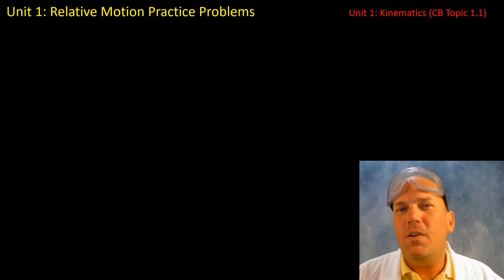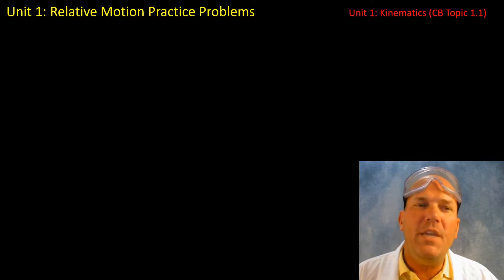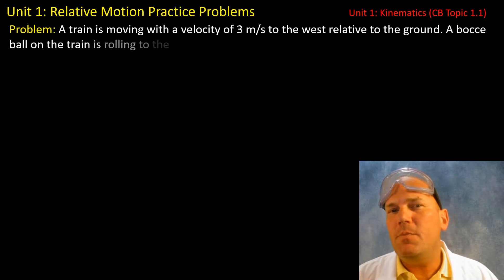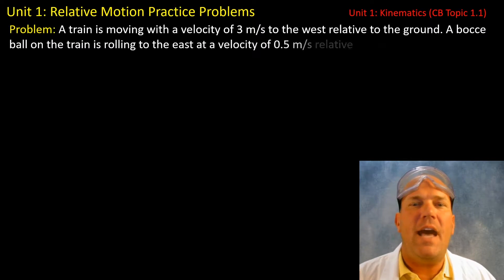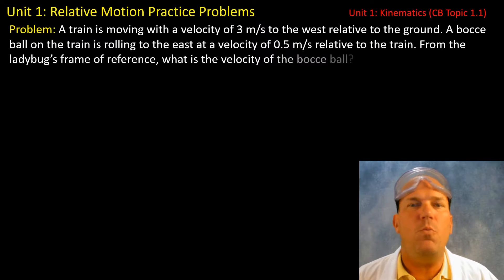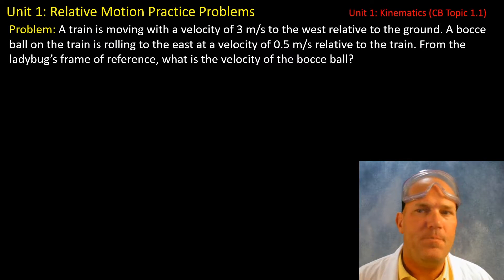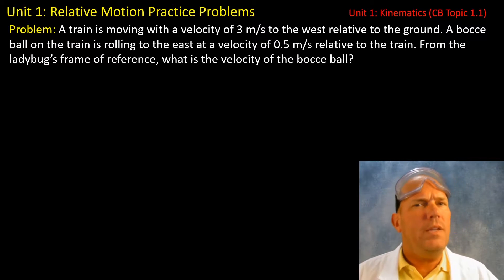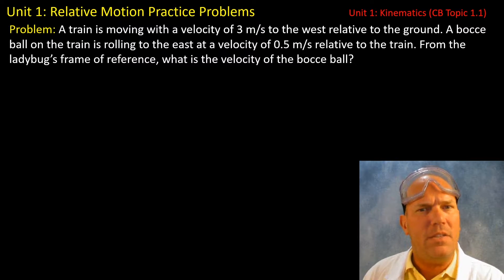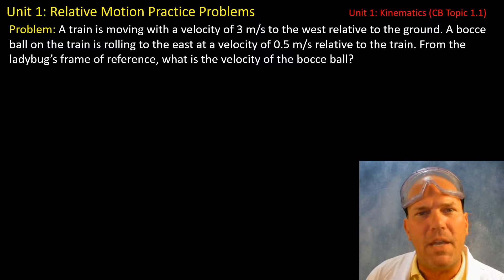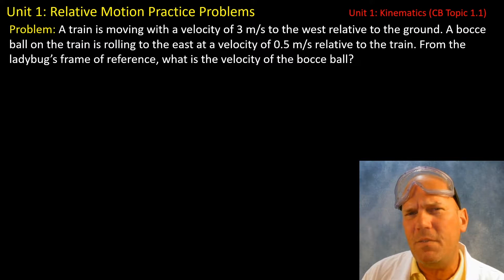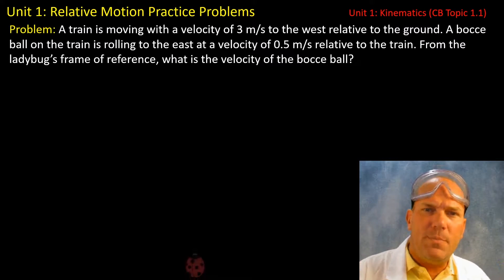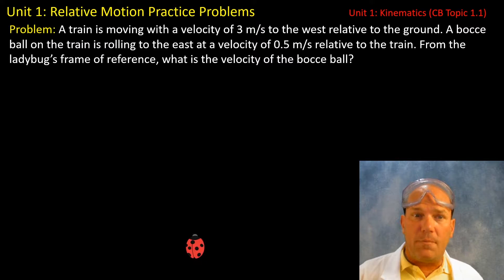In this video we're going to go over three practice problems involving relative motion. A train is moving with a velocity of 3 meters per second to the west relative to the ground. A bocce ball is on the train rolling to the east with a velocity of 0.5 meters per second relative to the train, from the ladybug's perspective at the bottom of your screen.